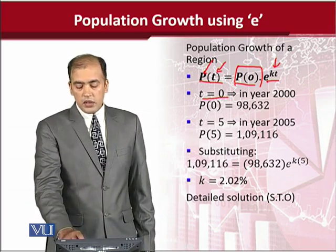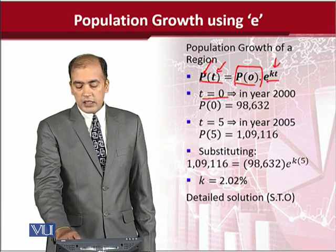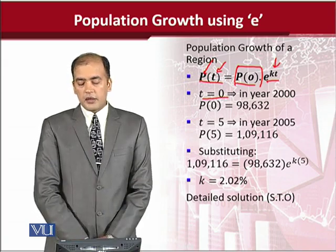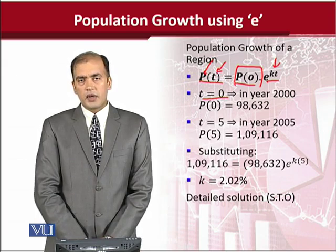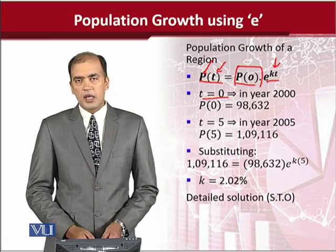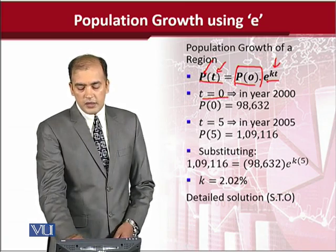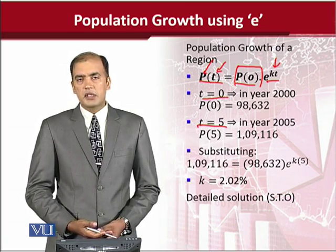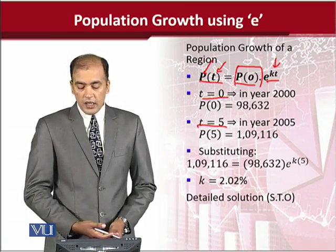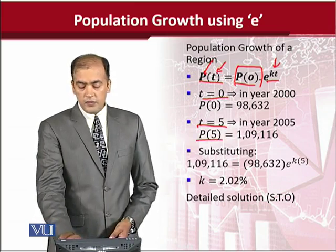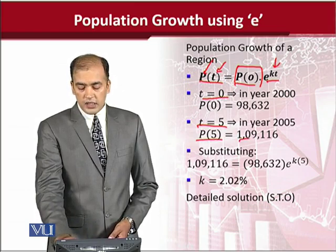Assuming t is equal to 0 in year 2000, P₀ is equal to 98.632 units. So the population at the beginning of analysis is this. Now we are assuming another point in time, that is after 5 years, and we are to see how population has changed. It is very easy to put the value of t equal to 5 and we get a certain answer.